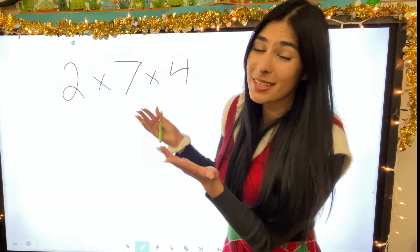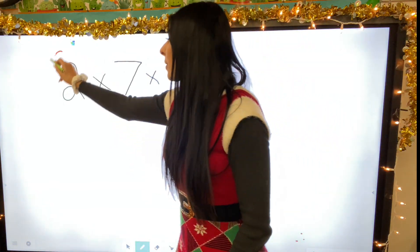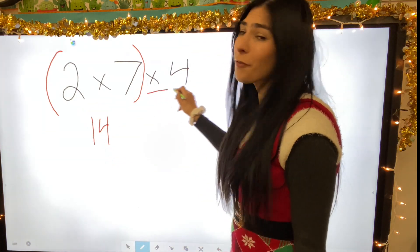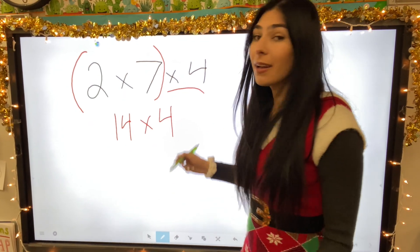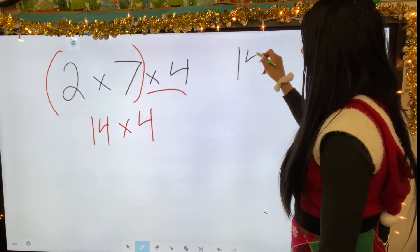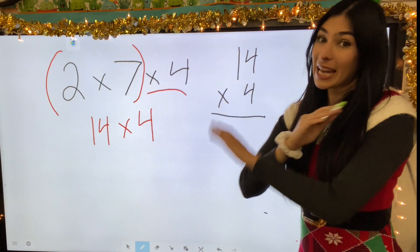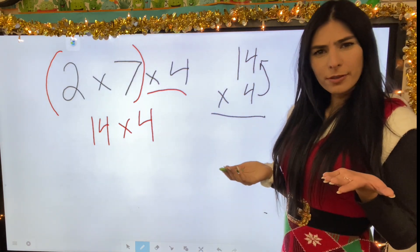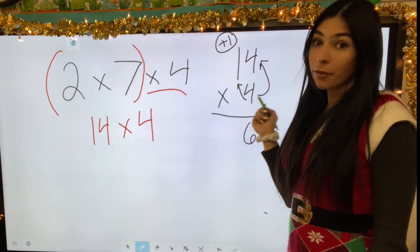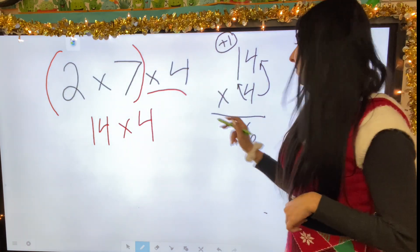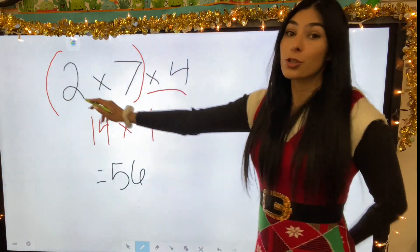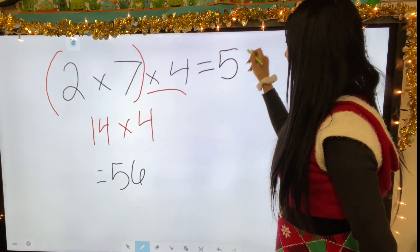Using commutative property, we switch the numbers around. Now let's add parentheses for associative property so we know which to solve first — the two and the seven hang out. Two times seven is fourteen. Bring that four down: fourteen times four, vertical. Times up: four times four is sixteen — put the six, carry the one. Times diagonal: four times one is four, plus one is five. We still get fifty-six. Our product is still the same — two times seven times four equals fifty-six.